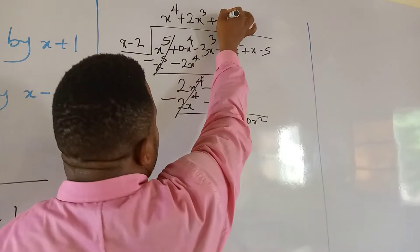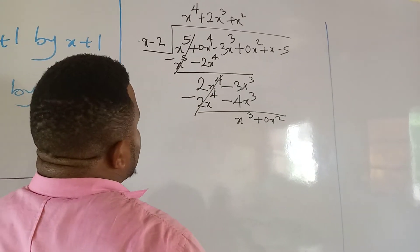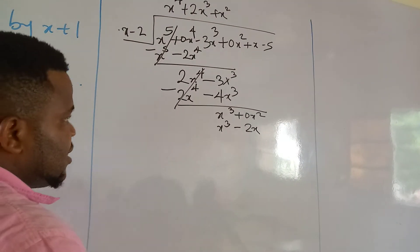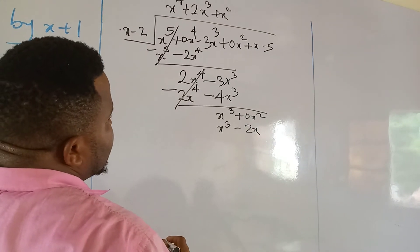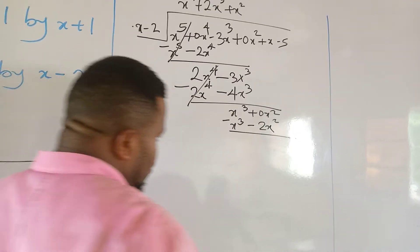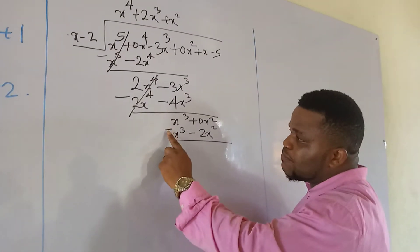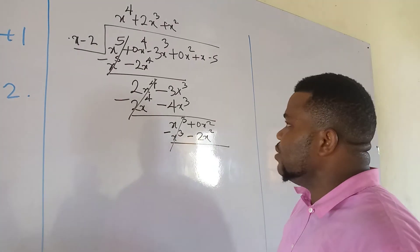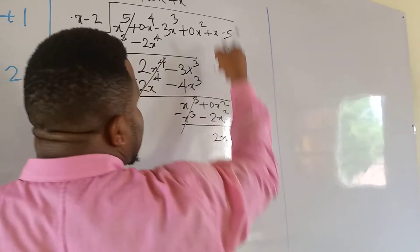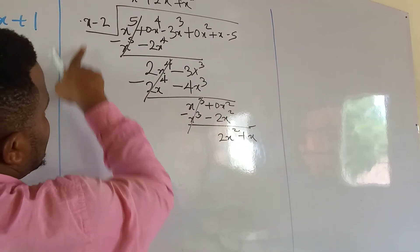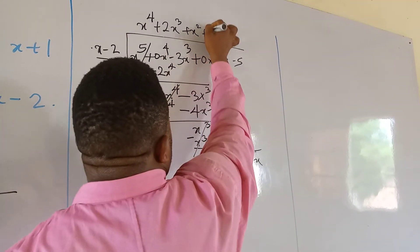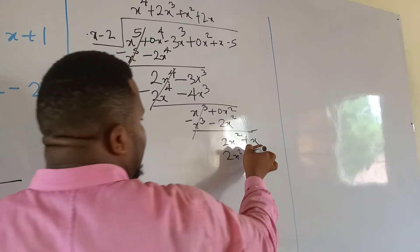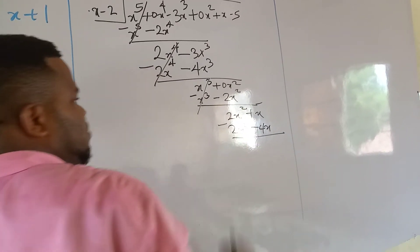x goes into x cubed giving plus x squared. x squared times x is x cubed, and x squared times negative 2 is minus 2x squared. We draw a line and introduce minus — x cubed cancels. Minus times minus 2x squared is plus 2x squared. Bring down the next term x, so we have 2x squared plus x. x goes into 2x squared giving plus 2x. Then 2x times x is 2x squared, and 2x times negative 2 is minus 4x.